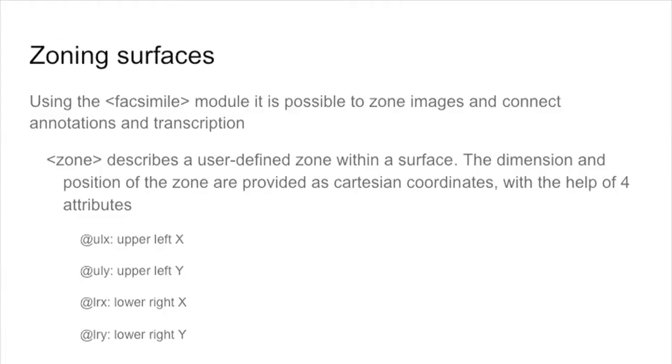The dimension and the position of this zone with respect to the whole image is defined using coordinates — Cartesian coordinates — which are expressed with the help of four particular attributes: ULX, ULY, LRX, and LRY. I never remember them, so I need to check them all the time.